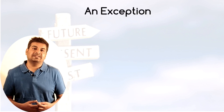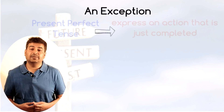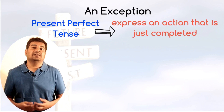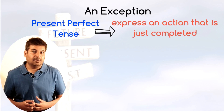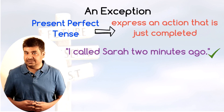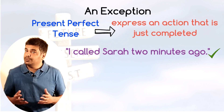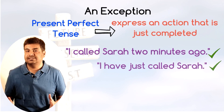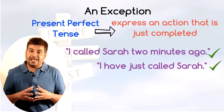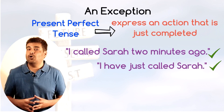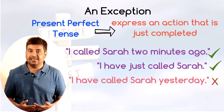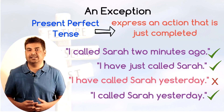Keep in mind an exception to the above rule. The present perfect tense can also be used to express an action that is just completed. For example, instead of saying 'I called Sarah two minutes ago,' you can say 'I have just called Sarah.' Both sentences are perfectly fine, but it is wrong to say 'I have called Sarah yesterday.' Instead, say 'I called Sarah yesterday.'